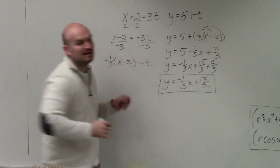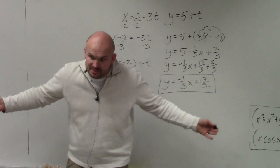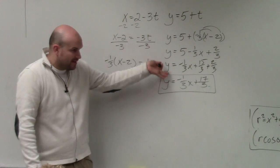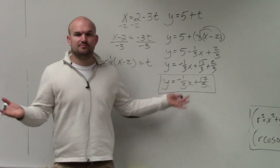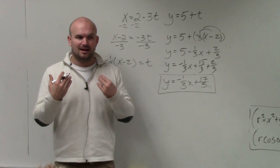So now, that is my equation without my parameter t. So I have eliminated my parameter t, and then I just need to identify what graph would this create, and this would produce a line.